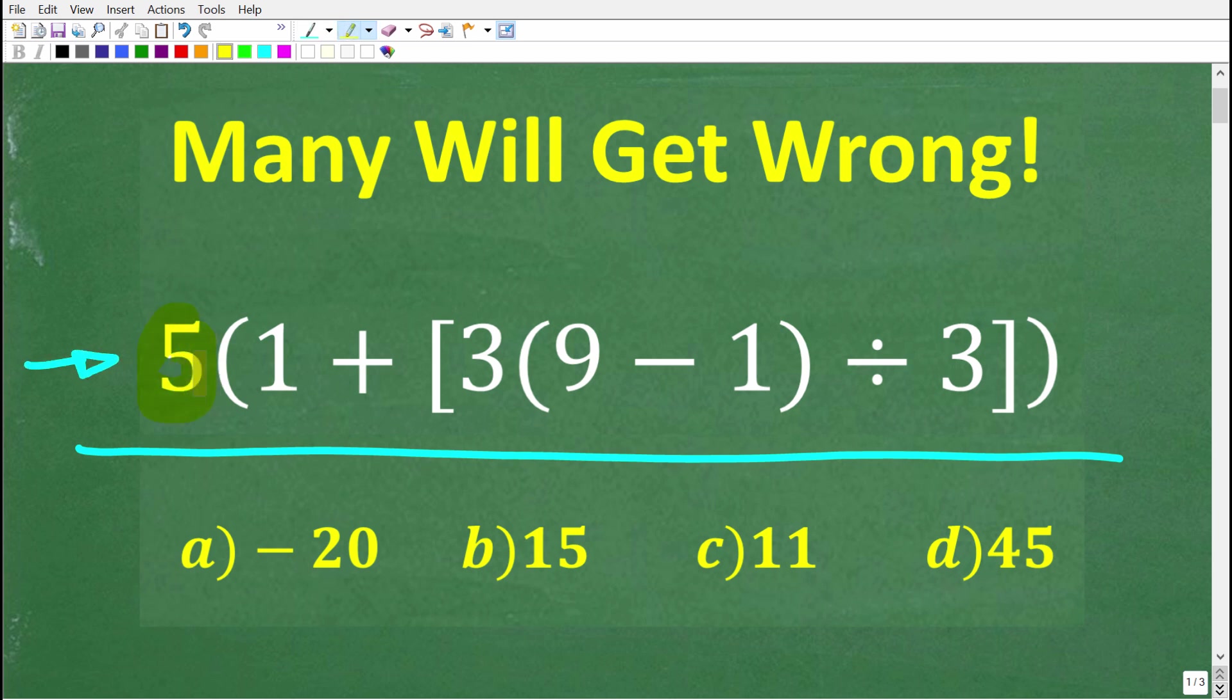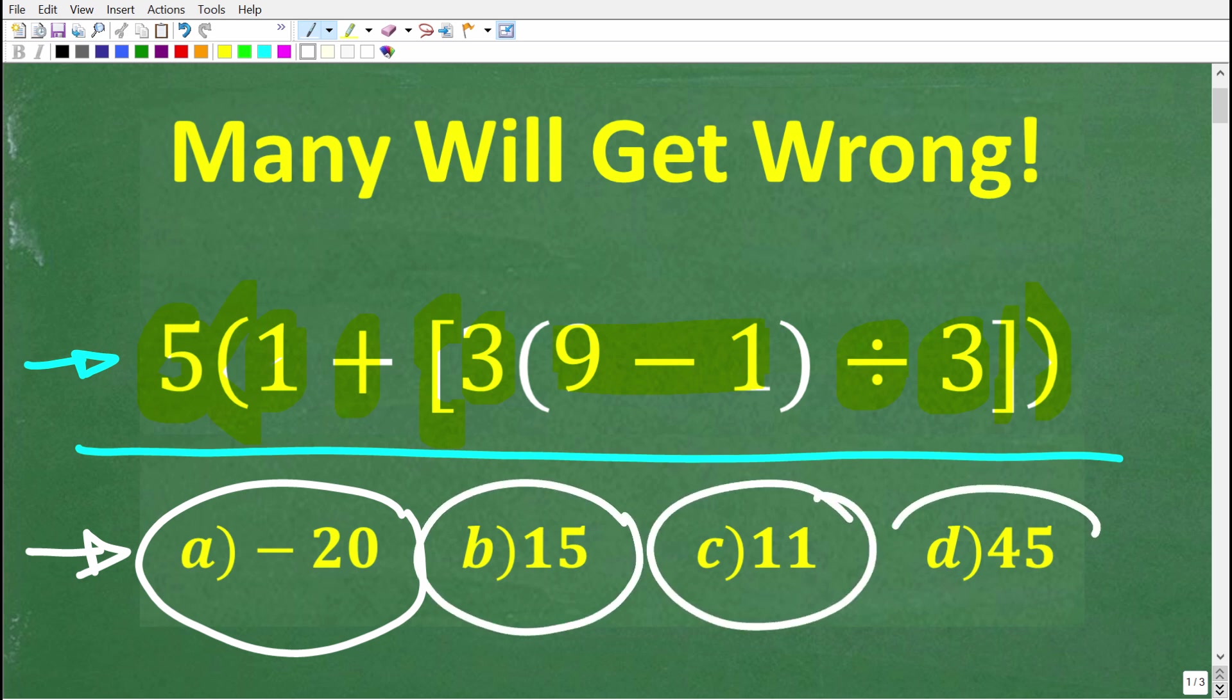We have 5 times parentheses 1 plus bracket 3 times 9 minus 1 in parentheses divided by 3 bracket in parentheses. So this is the problem, and again, no calculators, but we do have a multiple-choice question here. So A is negative 20, B is 15, C is 11, and D is 45.